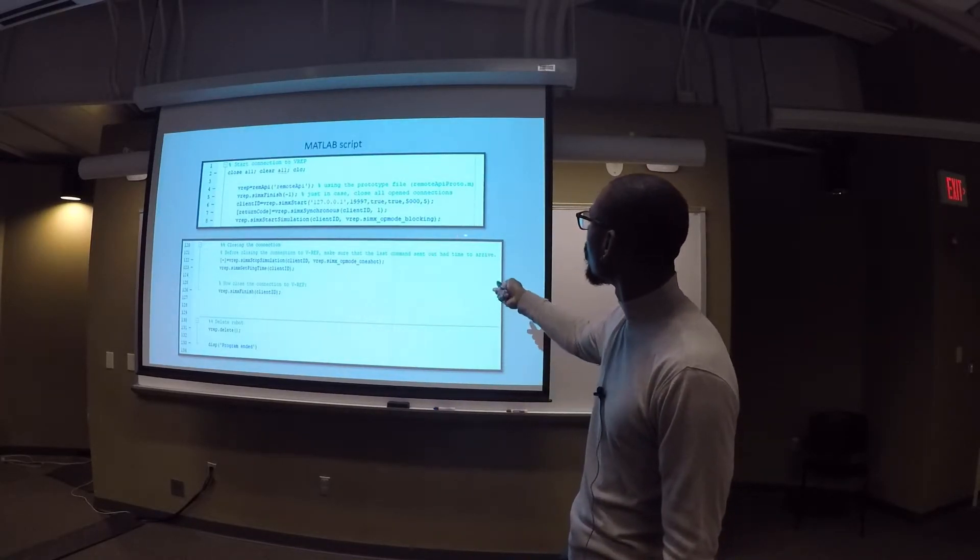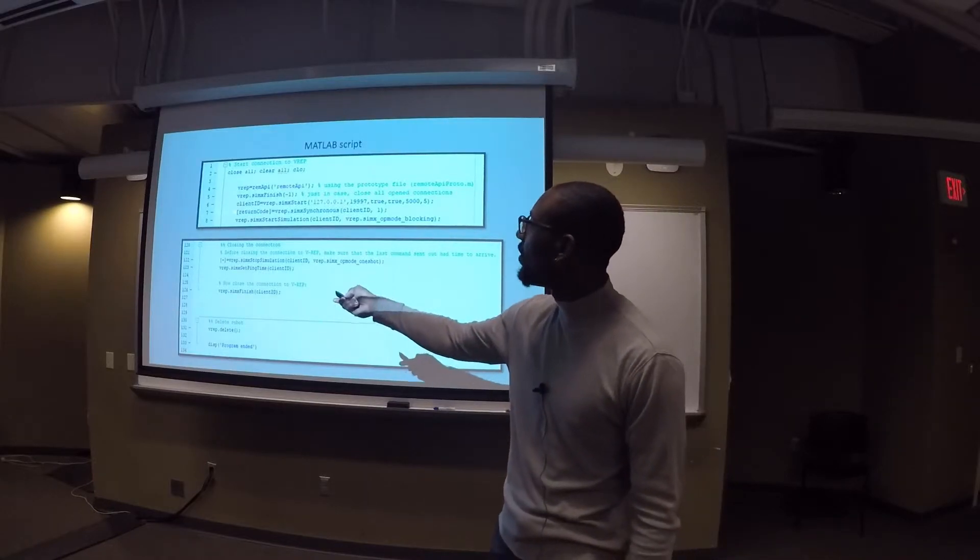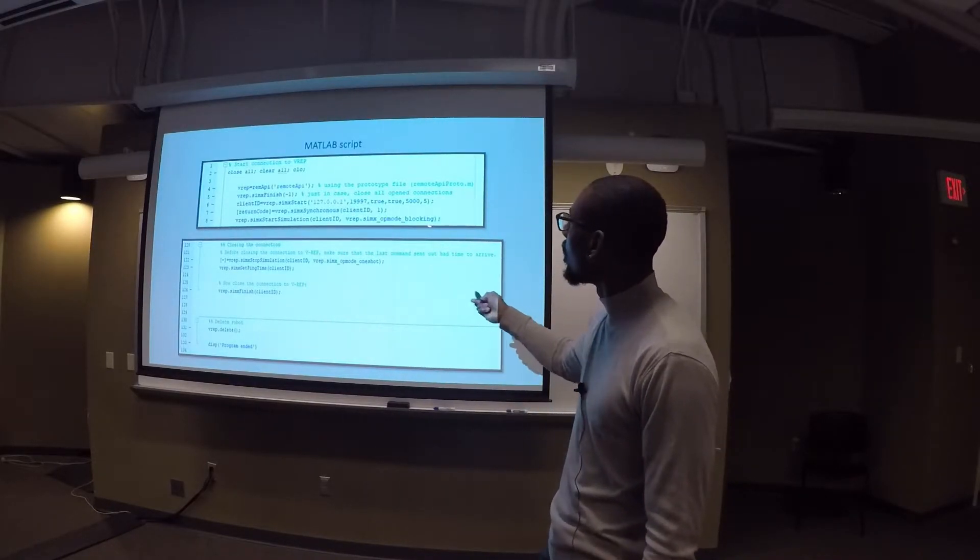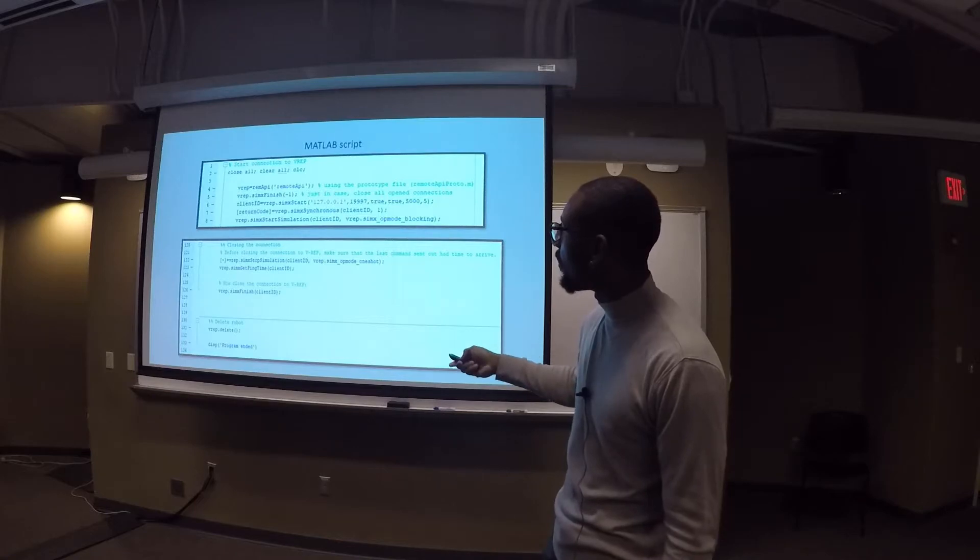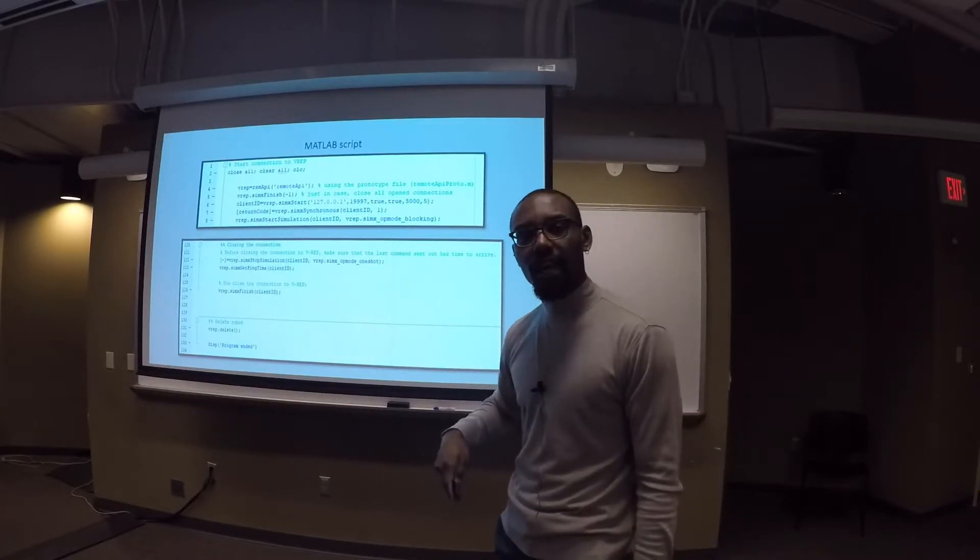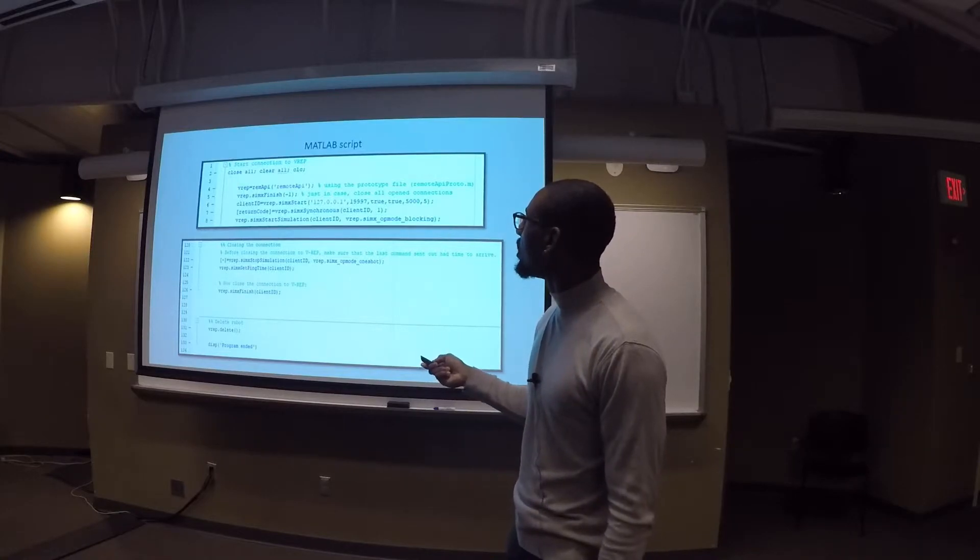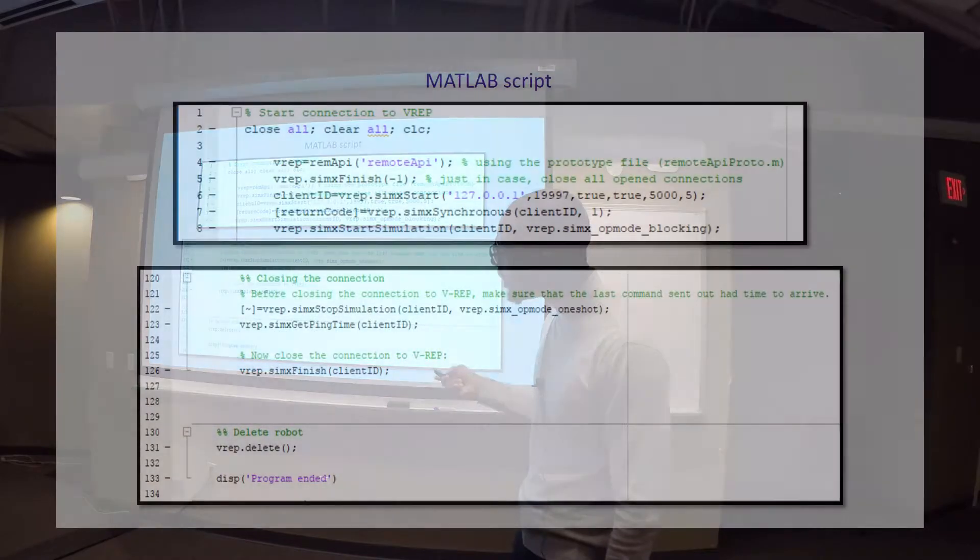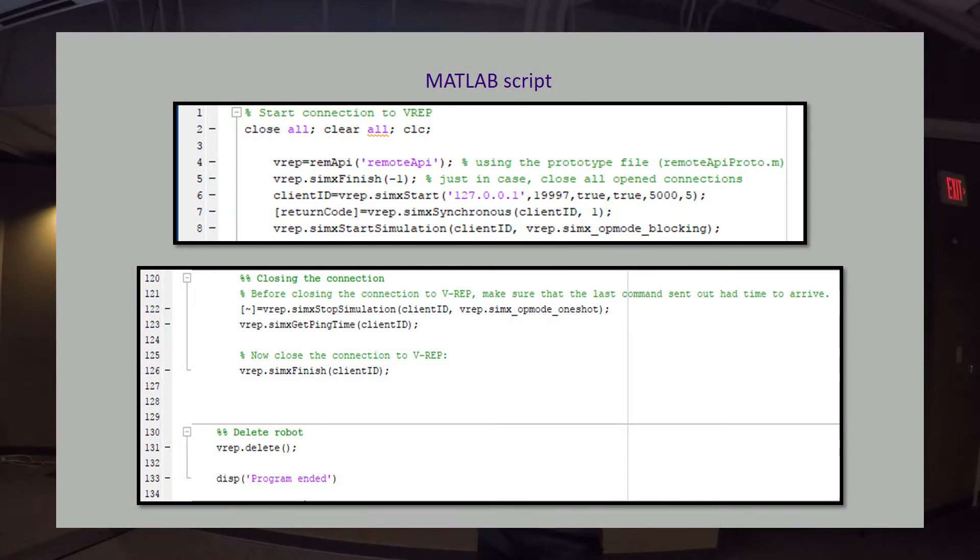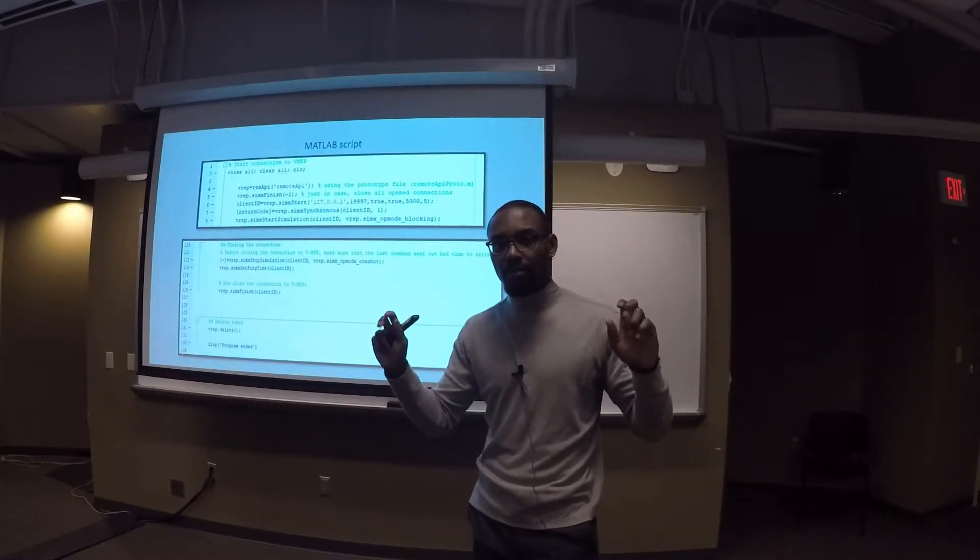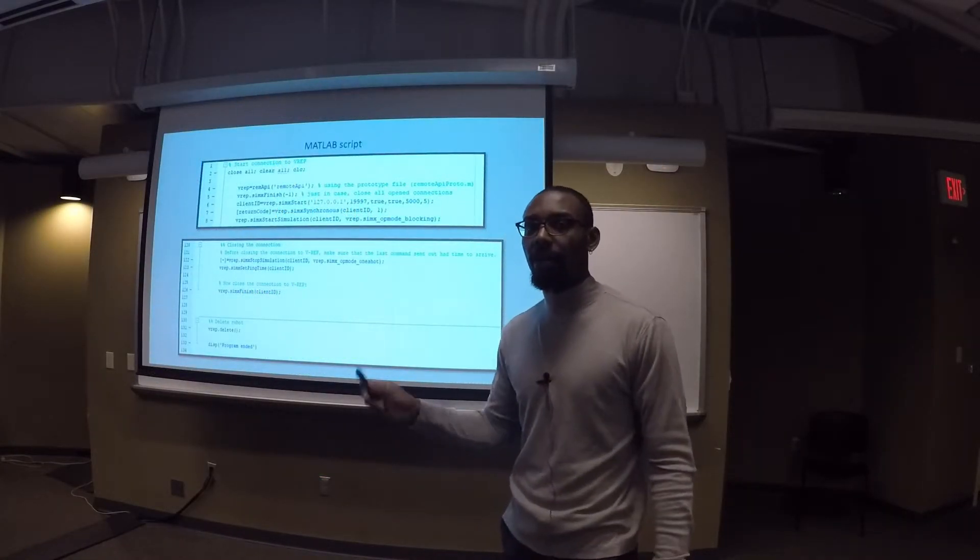Right inside of here, we put all of our control algorithms, all of our data, everything that we want to calculate goes in between these two sections of the code. Once we do those calculations in a while loop, we're going to go ahead and stop the simulation in VREP, finish all of our connections to VREP, close everything down, and delete the robot, this virtual robot that we've created.